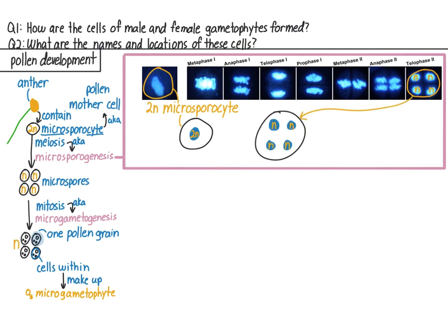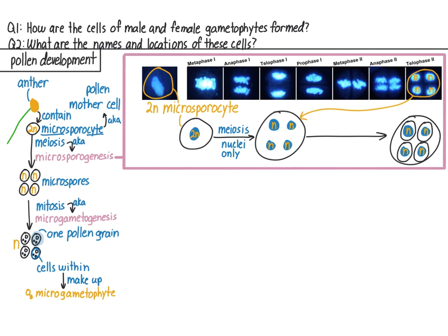Here's a drawing of this cell following meiosis, showing the four haploid nuclei. Next, each of these nuclei develop their own cytoplasm and cell membrane in a process called cellularization, resulting in four cells within one cell wall. This structure is called a tetrad. The tetrad, with its four microspores, is the end product of microsporogenesis.